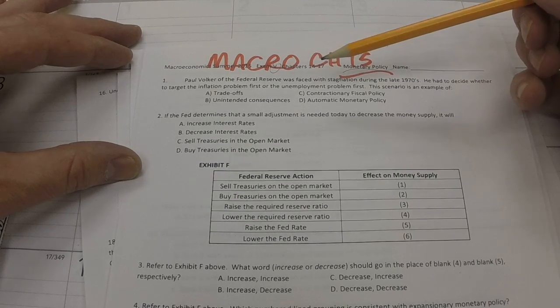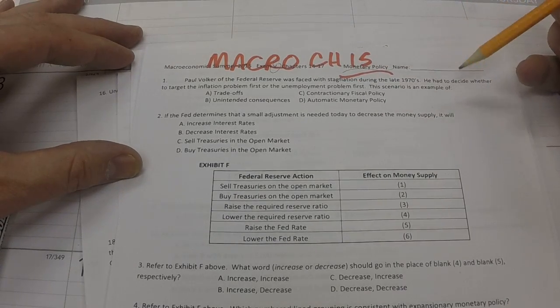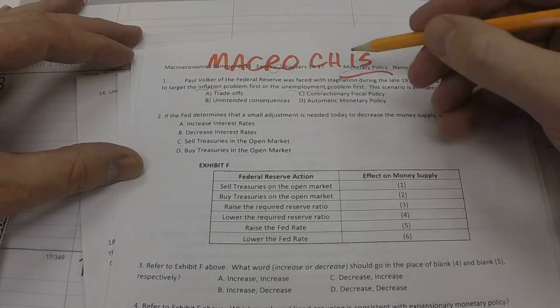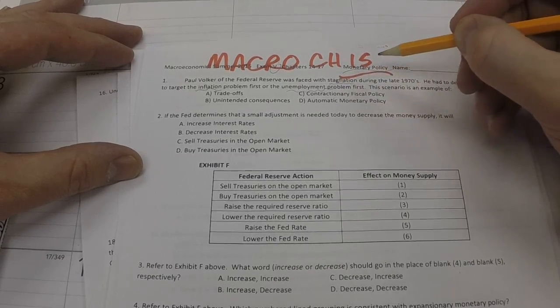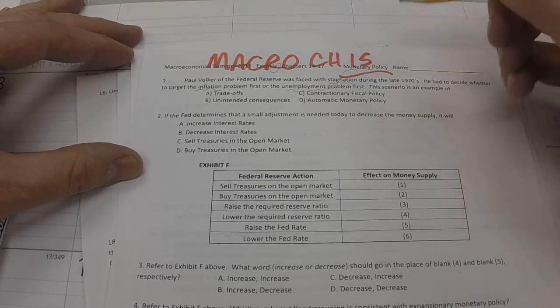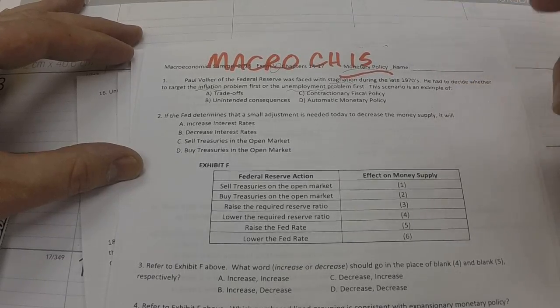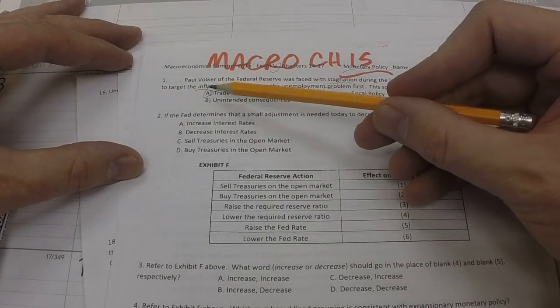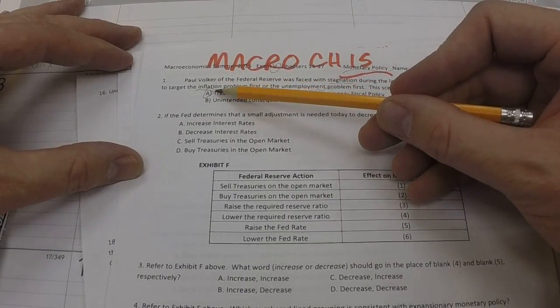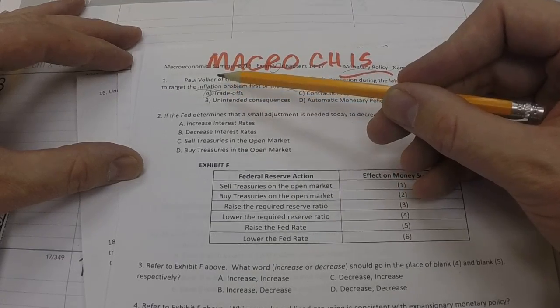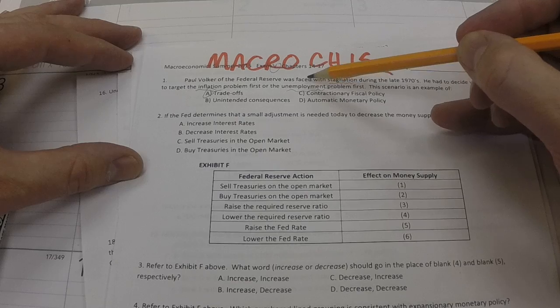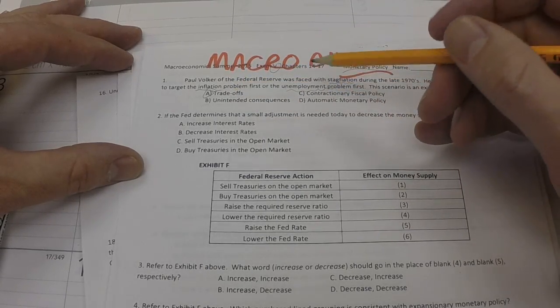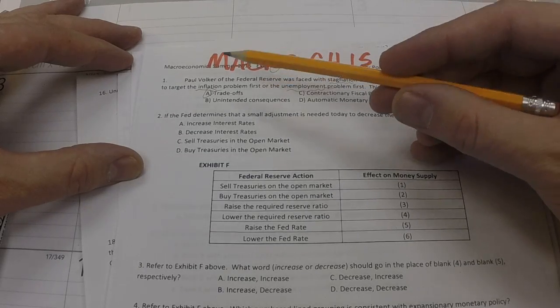First question. Paul Volcker of the Federal Reserve was faced with stagflation during the late 1970s. He had to decide whether to target the inflation problem or the unemployment problem first. Stagflation is when you have high unemployment and high inflation at the same time. This scenario is an example of a dilemma, and there are tradeoffs involved. What Paul Volcker chose to do was target inflation first. He figured by lowering inflation, he would bring stability to the economy. And even though that would increase unemployment in the short run, it would eventually correct unemployment by restricting the money supply.